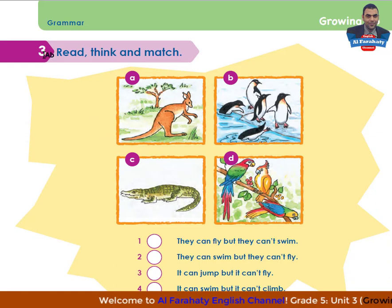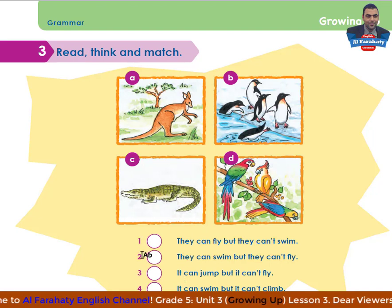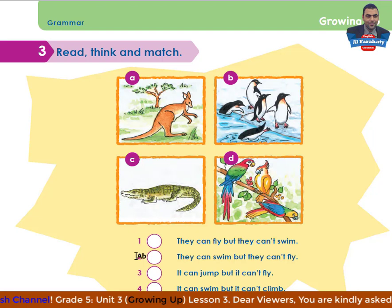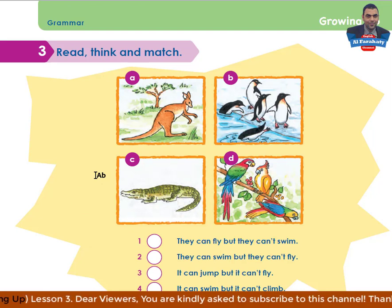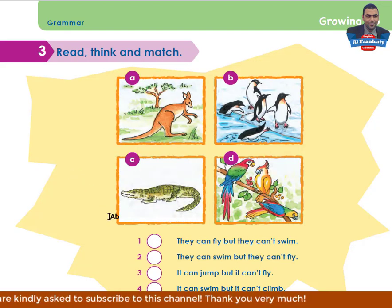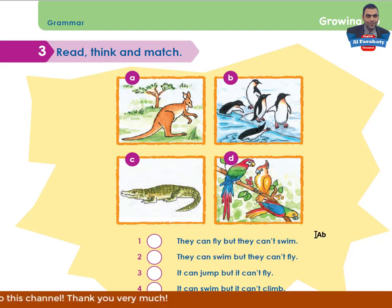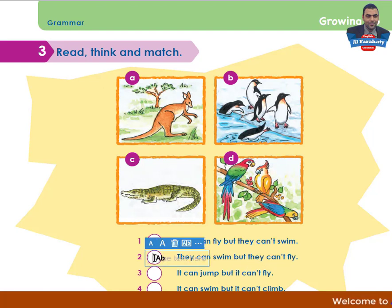Let's go to page 29. Activity 3 - read, think, and match. You are asked to read these sentences and match them to the pictures. Take your time to do this activity, then come back to check your answers. Number 1: they can fly but they can't swim - picture D. Number 2: they can swim but they can't fly - penguins, picture B.